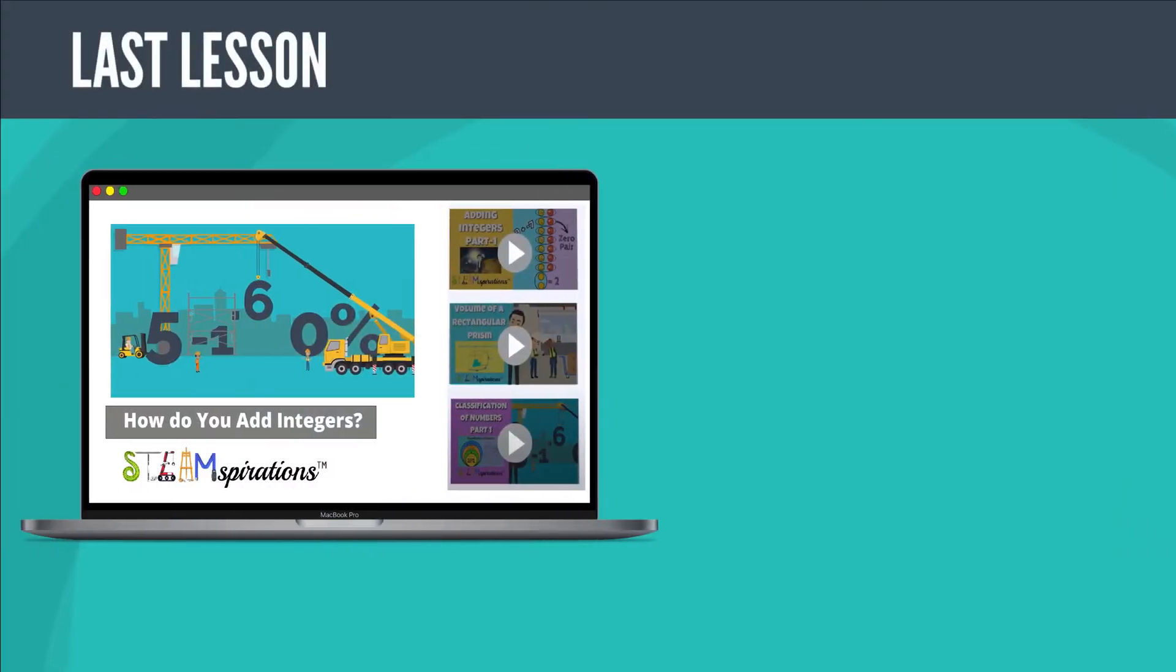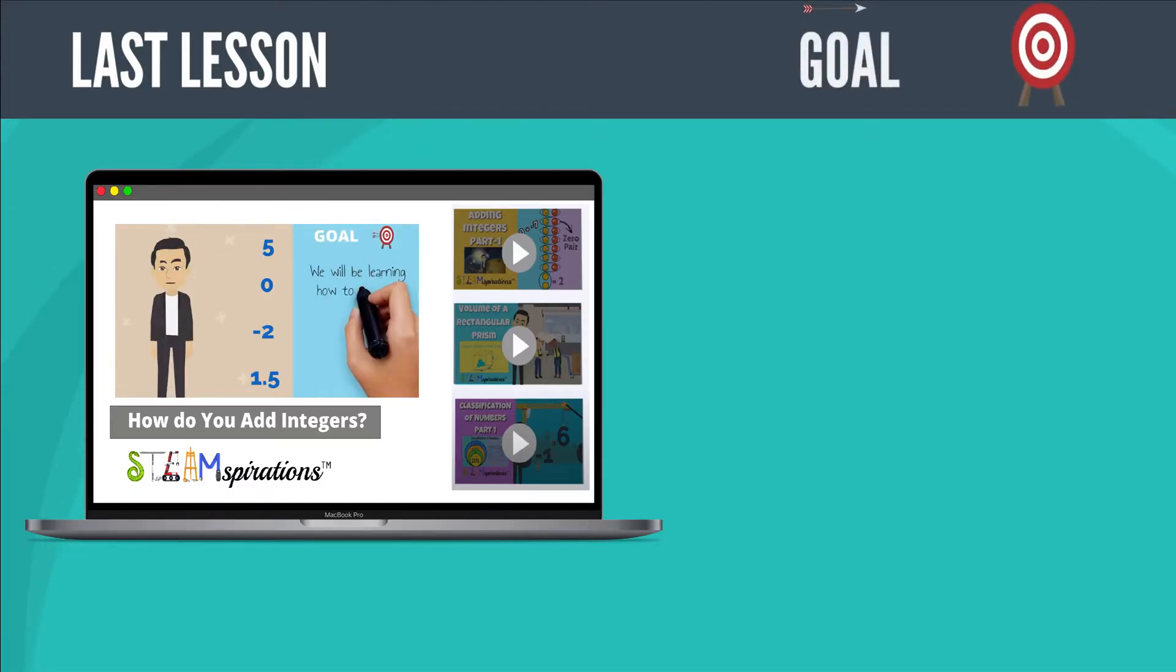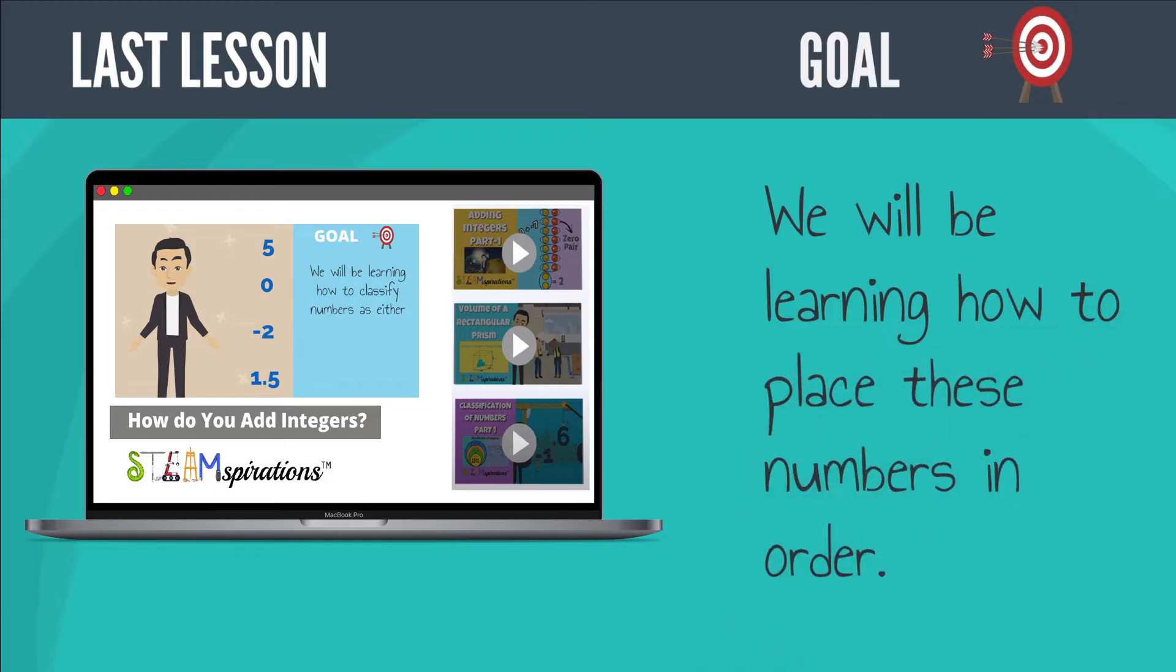Last lesson, we learned that integers include the digit 0, all positive and negative numbers. In this video, we will be learning how to place these numbers in order.